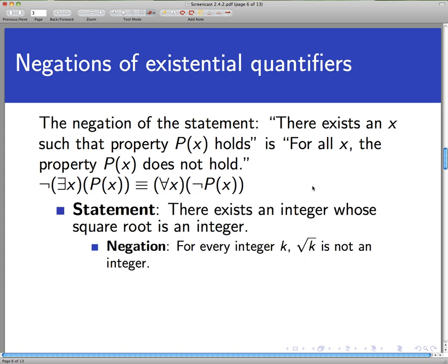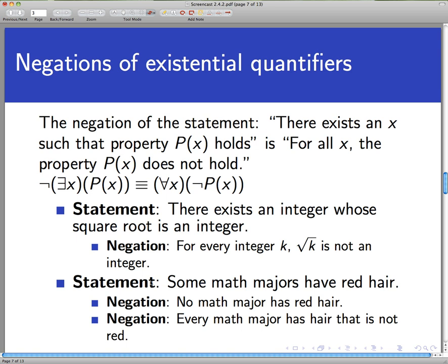More examples: 'There exists an integer whose square root is an integer.' The negation of that statement would be 'for every integer k, √k is not an integer.' So again, we've changed from existential to universal and we're negating the property. We started with 'the square root is an integer' and ended with 'the square root is not an integer.'